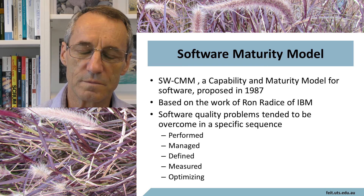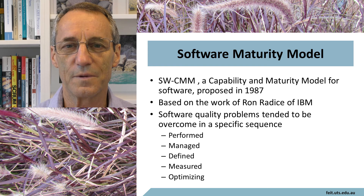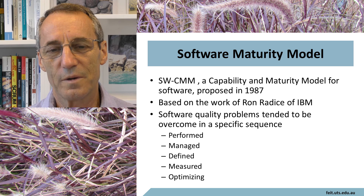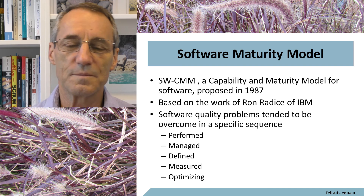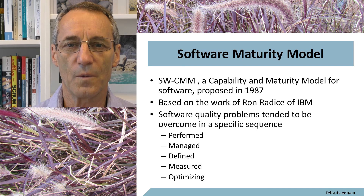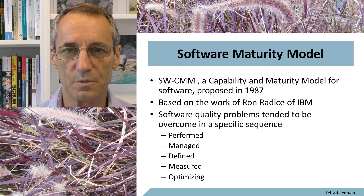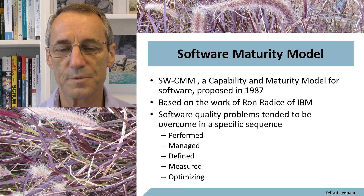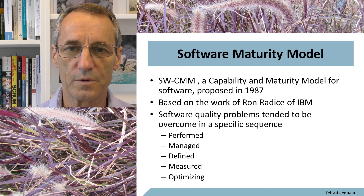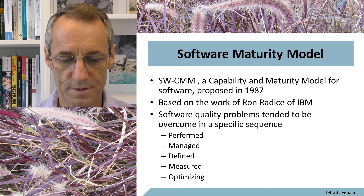The model set out software development maturity in five levels: performed, managed, defined, measured, and optimizing. Watts Humphrey said the first three levels were evident to him, but he couldn't prove the last two — measured and optimizing. However, they seemed to make a lot of sense, and the model has been widely adopted and taken up since that time.